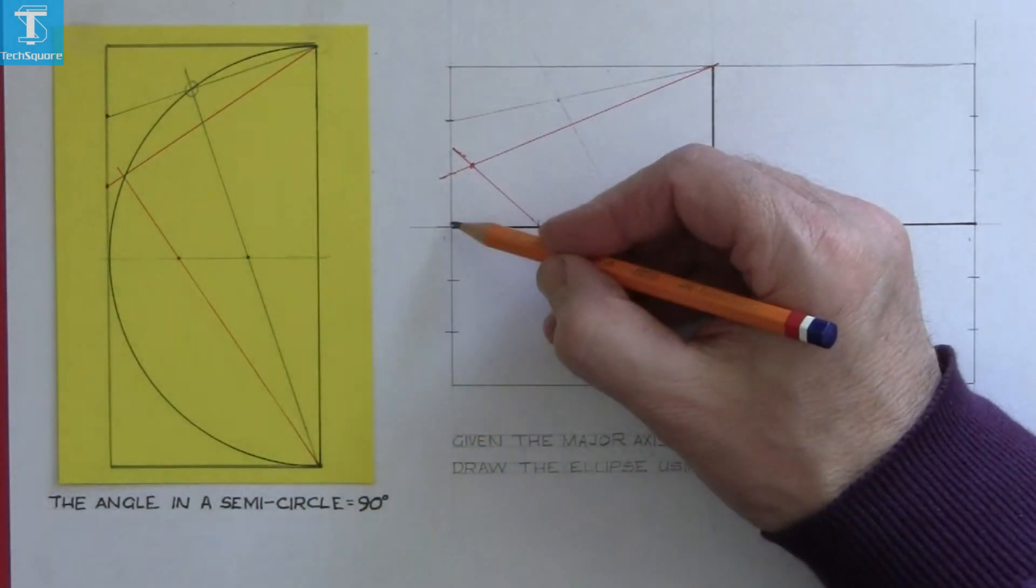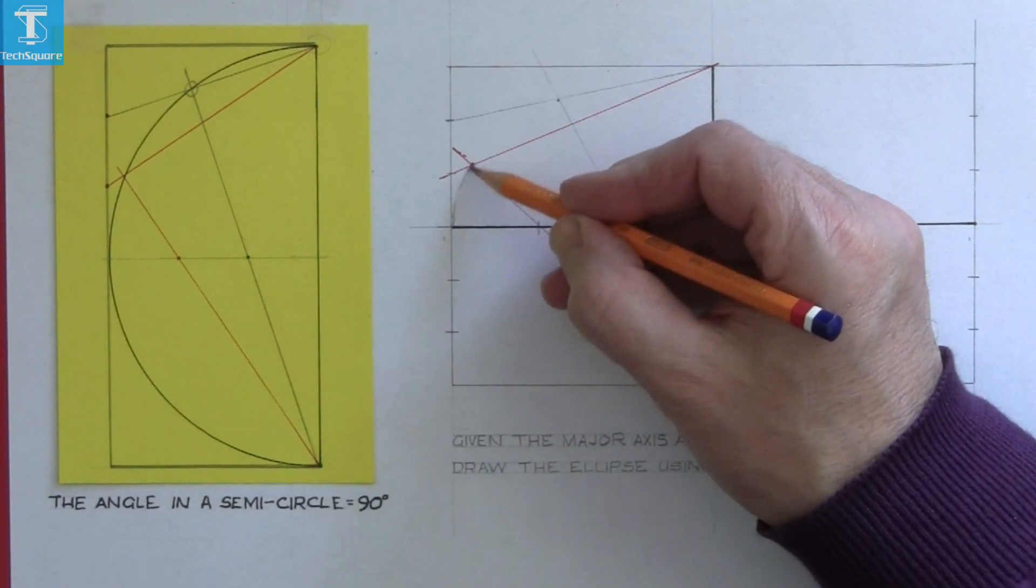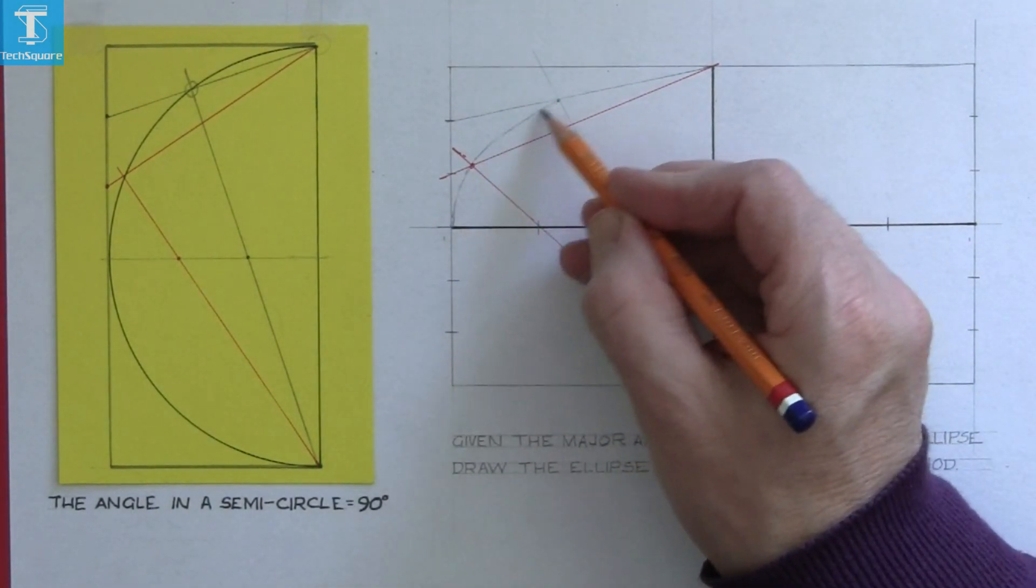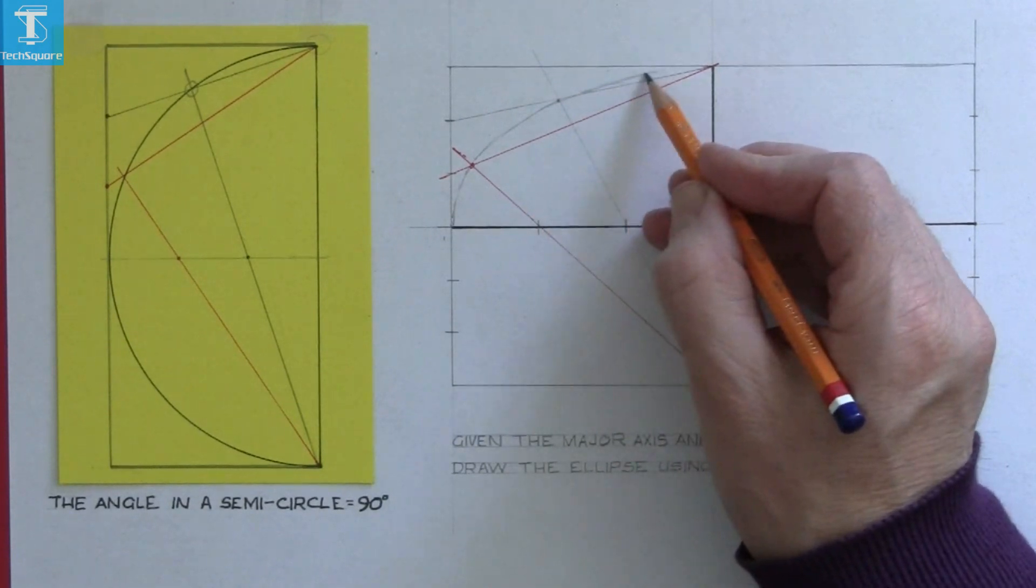Now a freehand curve through those points. That gets us a quarter of the ellipse complete.